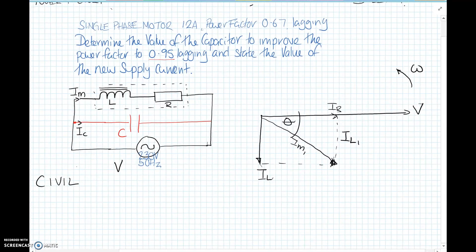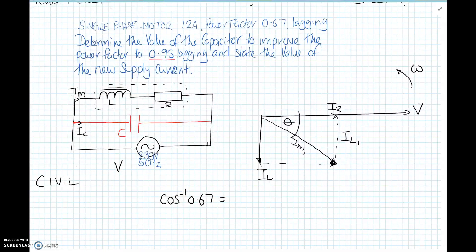So let's put some figures in then. Before we start, we know that the power factor is given as 0.67. So to change that into an angle, we need to inverse cosine the factor to get the angle. Make sure your calculator's in degrees and not radians. So we've got inverse cosine of 0.67, which gives us 47.93 degrees. So that's what this angle's going to be.